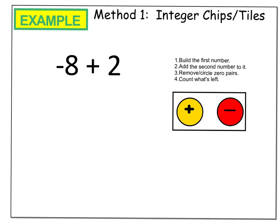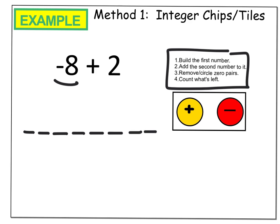All right, the first method we're going to take a look at is adding using integer tiles. The instructions tell you to first build the first number, so the first number I see here is negative eight. So I'm going to write 1, 2, 3, 4, 5, 6, 7, 8. And then it tells me to add the second number to it.